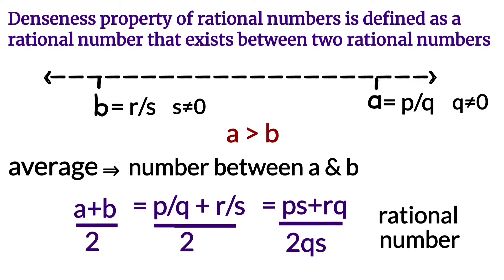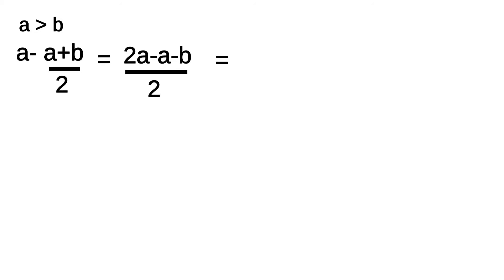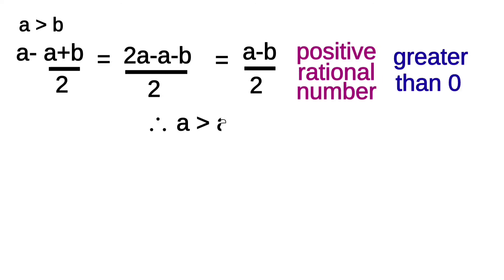The average of two rational numbers lies in the middle of those two numbers. If a is greater than b, then a minus (a + b)/2 equals (2a - a - b) / 2, which gives (a - b) / 2. Since a is greater than b, (a - b) / 2 is a positive rational number, so a is greater than (a + b) / 2.